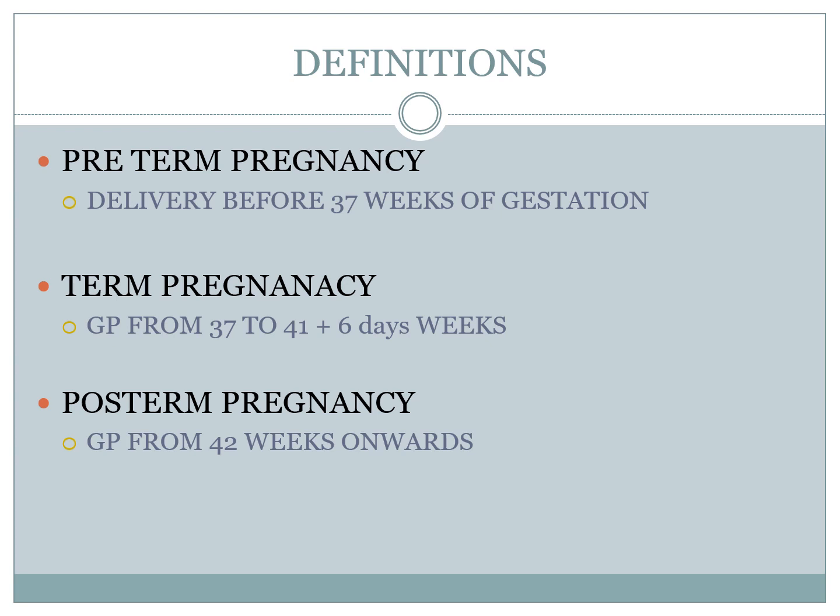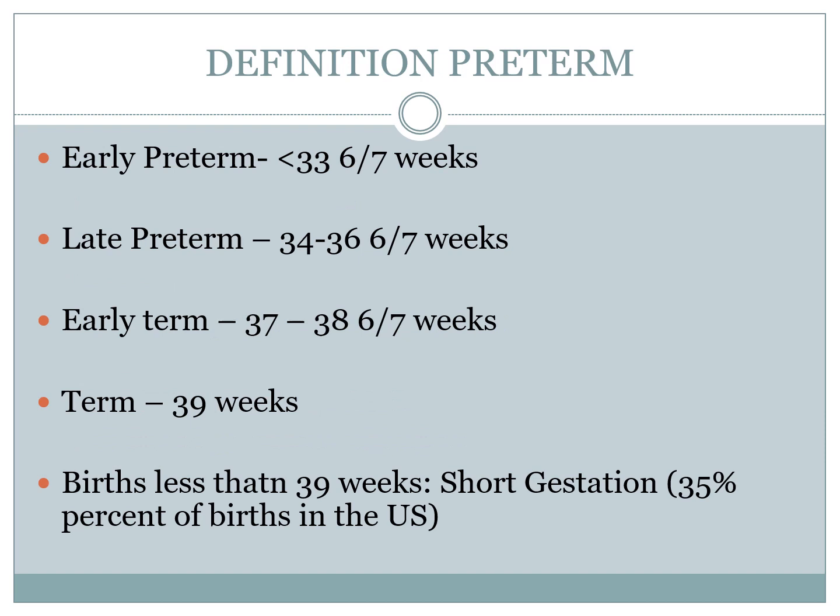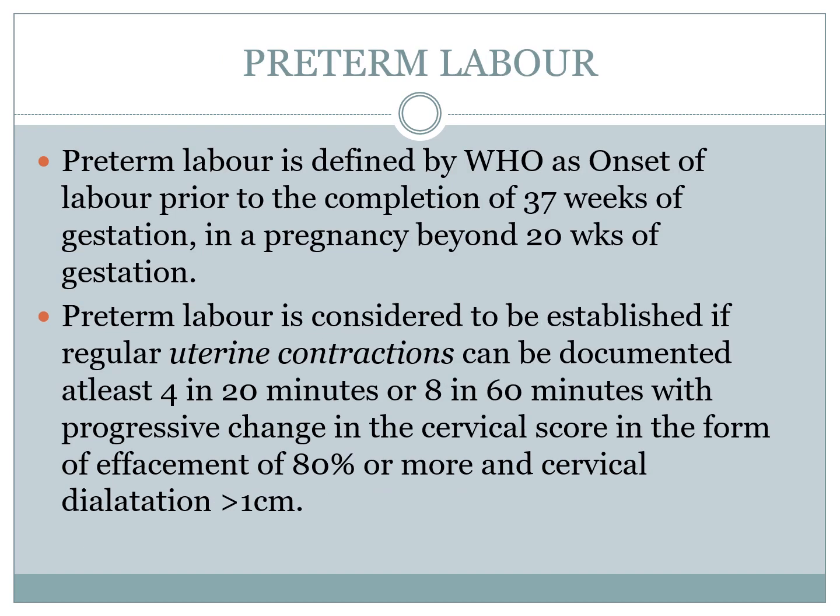Definitions: preterm pregnancy is delivery before 37 weeks of gestation. Term is 37 to 41 weeks and 6 days, and post-term would be 42 weeks age of gestation. It is further subdivided into early preterm, which is less than 33 weeks and 6 days, late preterm at 34 to 36 weeks and 6 days, and early term and term, which comprises 35% of births in the U.S. Preterm labor is defined by the WHO as onset of labor prior to the completion of 37 weeks of gestation and a pregnancy beyond 20 weeks of gestation.